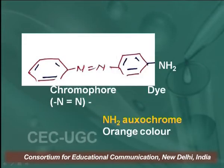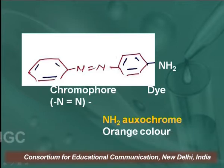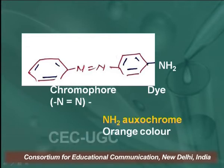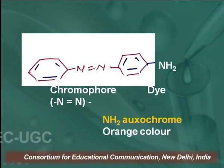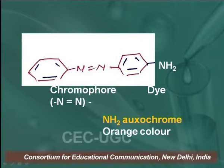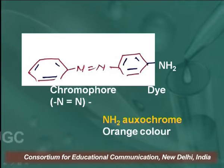Similarly, in another example, there is a chromophore which is N=N, the azo group — azo group is a chromophore. Along with the azo group, there is an NH₂ group. Due to the presence of the NH₂ group, it intensifies the colour of this chromophore and we get a perfect orange colour.